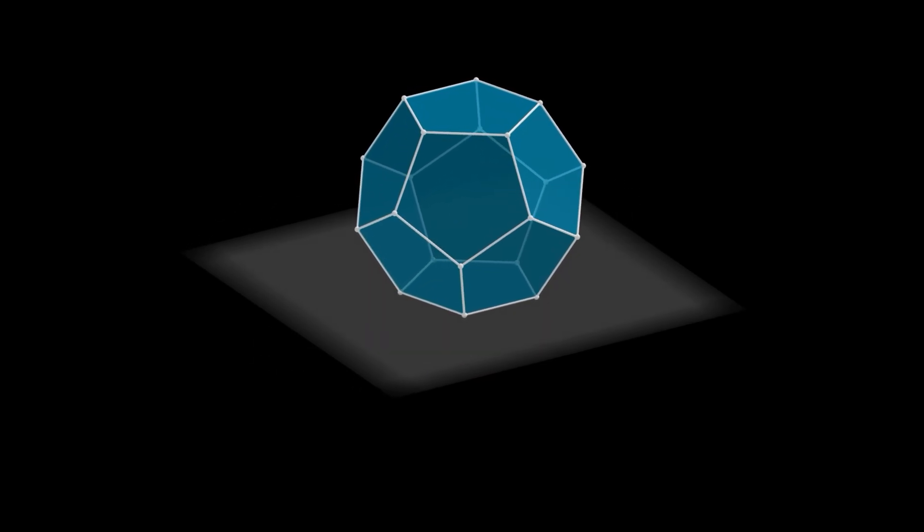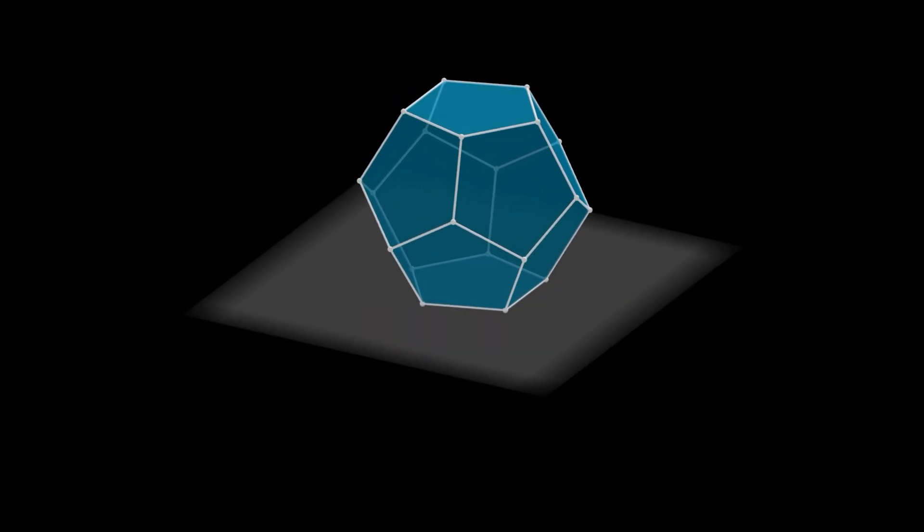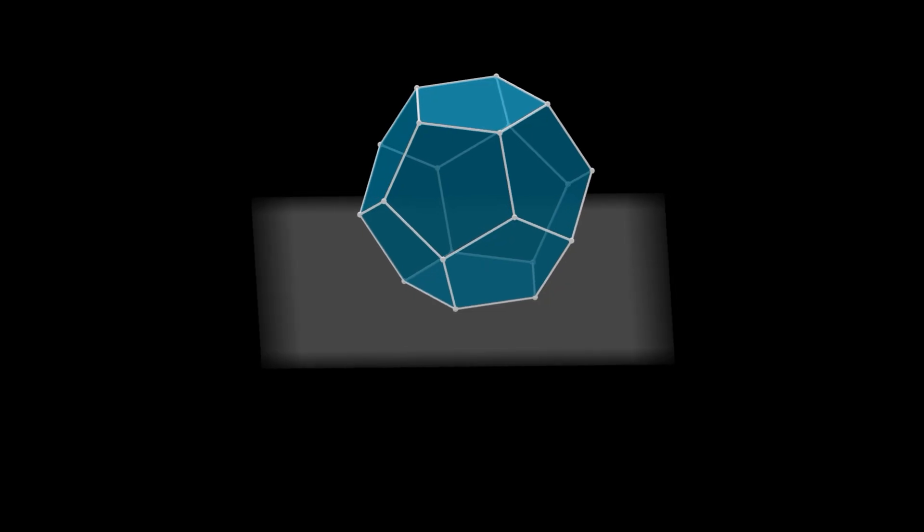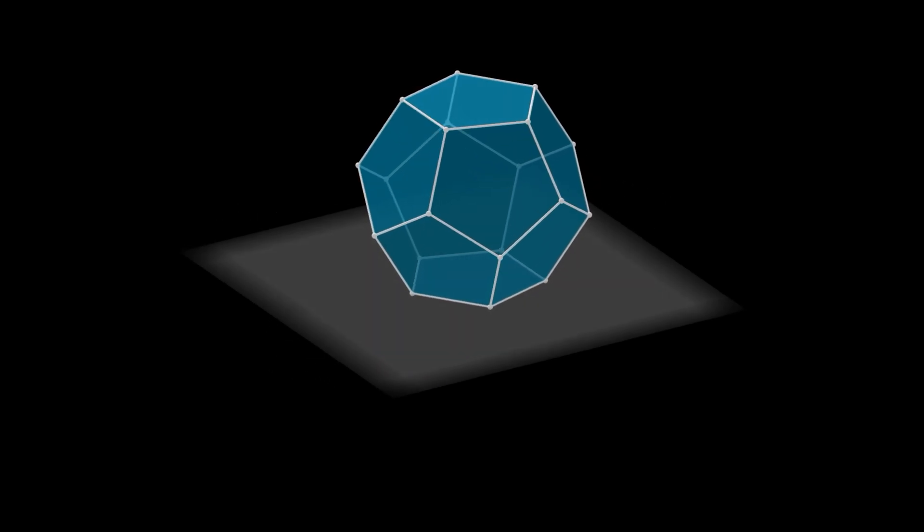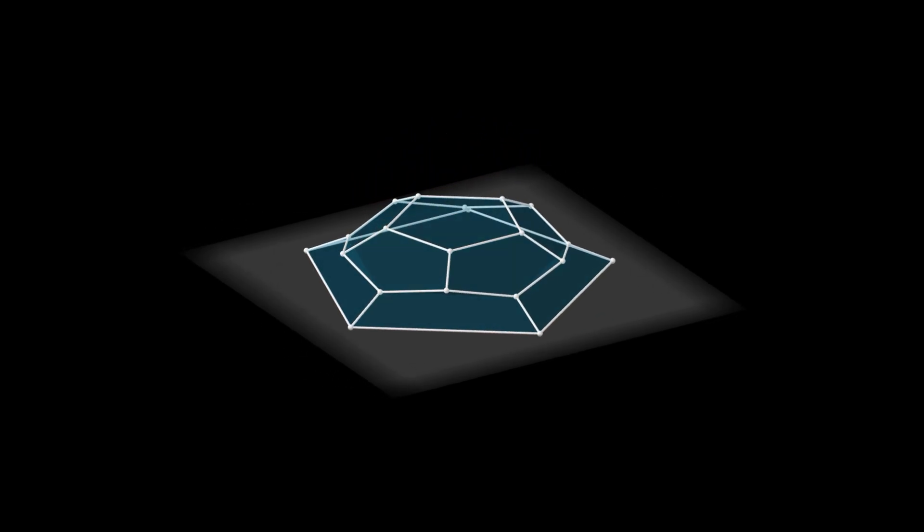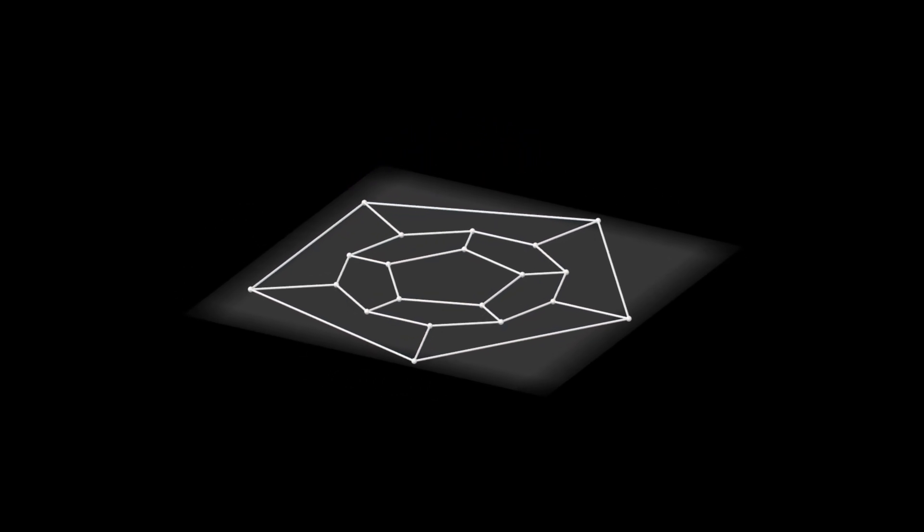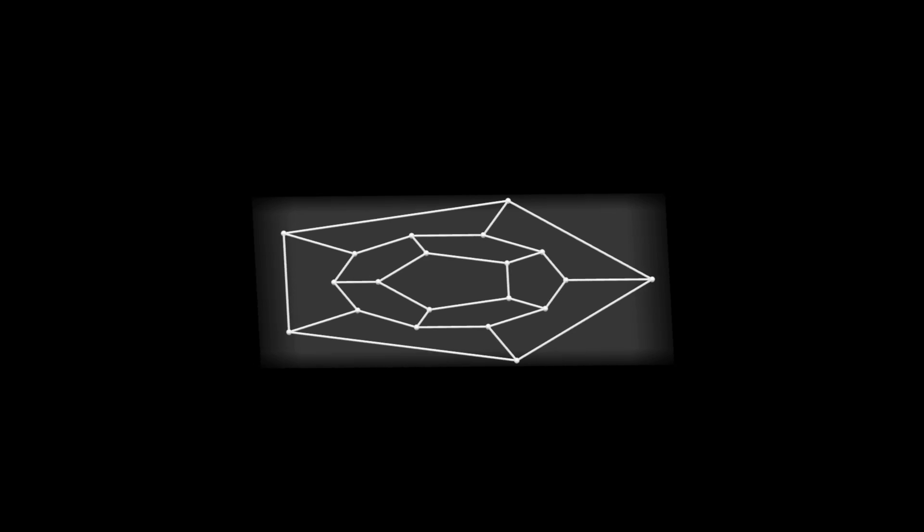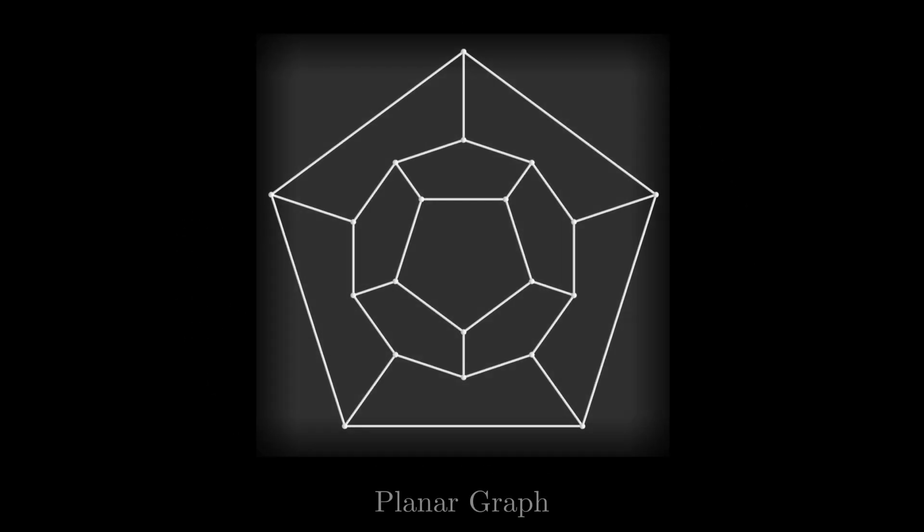We begin by disregarding metric properties such as lengths, areas, and angle measures, and note that we can create a particular type of two-dimensional representation of any convex polyhedron. Specifically, we can flatten out the polyhedron in such a way that the edges still meet only at vertices and do not cross elsewhere. In the field of graph theory, such a drawing is called a planar graph.